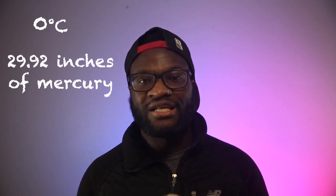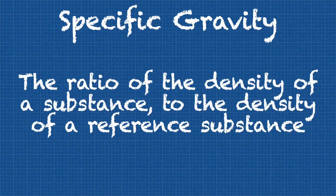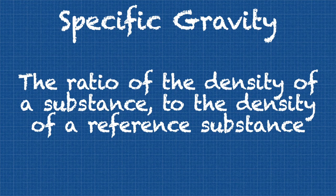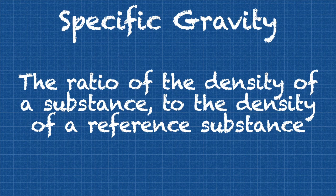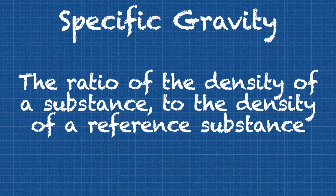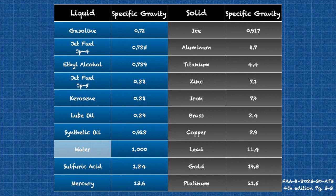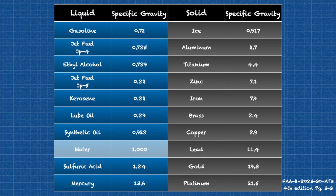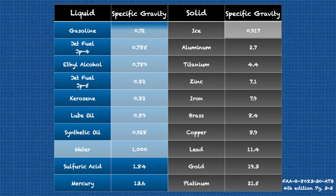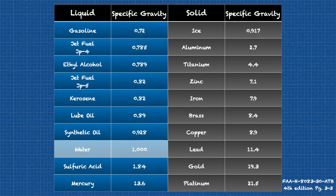The standard pressure of 29.92 inches of mercury is the average pressure of the atmosphere at sea level. This comparison of a substance density to a reference substance density is called specific gravity. Specific gravity is defined as the ratio of the density of a substance to the density of a reference substance. Since water is typically used as the standard, we can determine, based on a substance's specific gravity value, if a particular substance will float or sink in water. Water has a specific gravity of 1. The higher the number, the higher the specific gravity, and the lower the number, the lower the specific gravity.